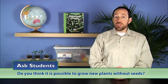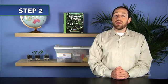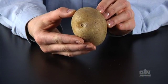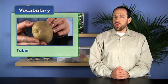To begin Session 1, review the parts of a plant with students and the process by which plants grow from seeds. Ask students, do you think it is possible to grow new plants without seeds? Accept all answers. Then place a potato on a demonstration table and explain that a potato is a tuber, or a plant that grows underground and is thick with stored food.